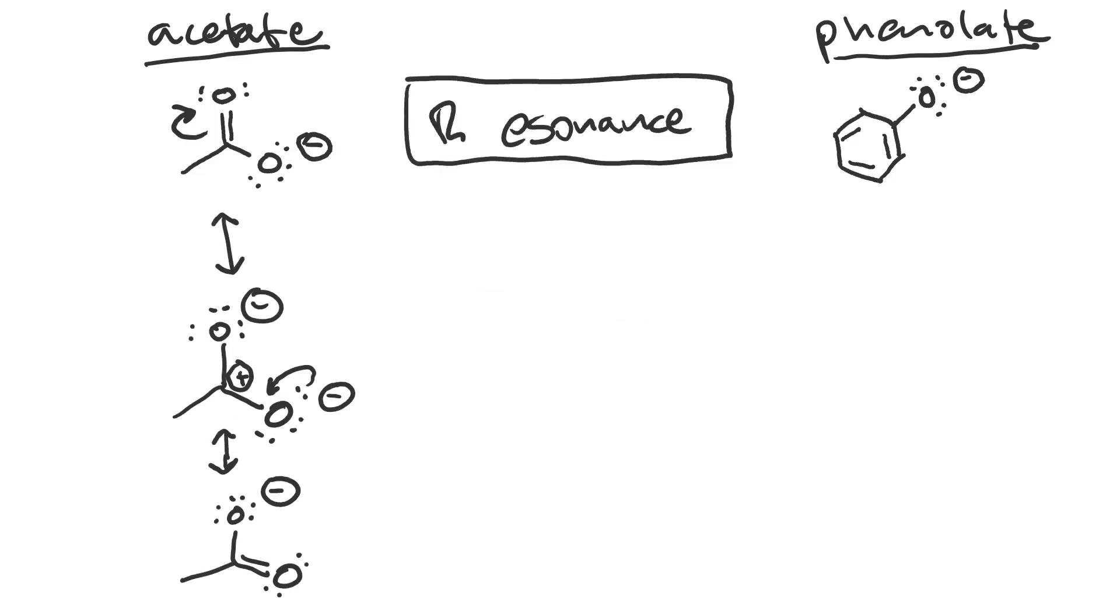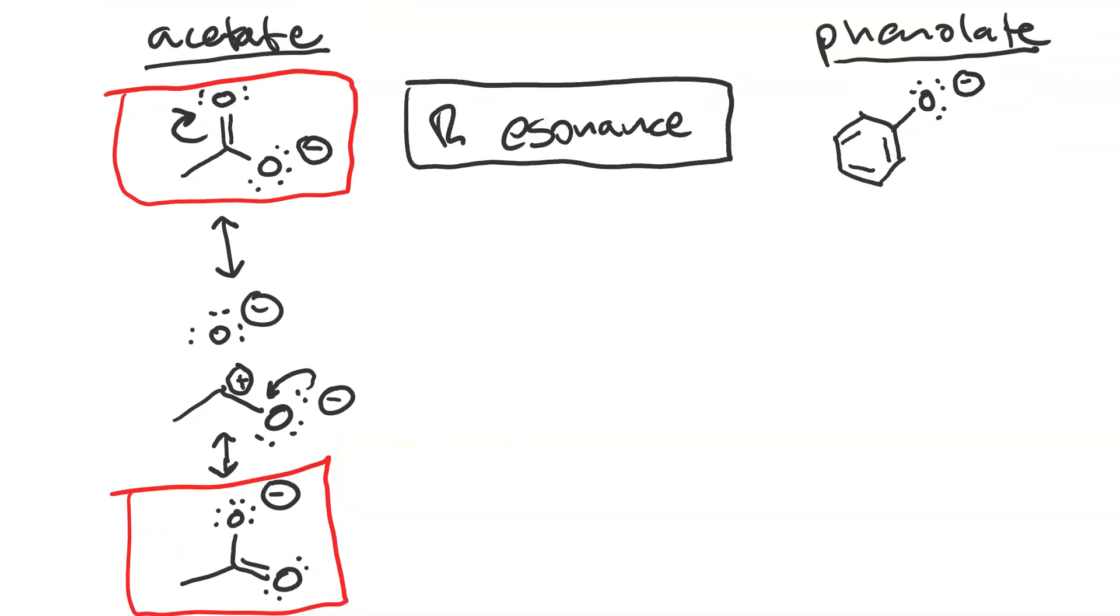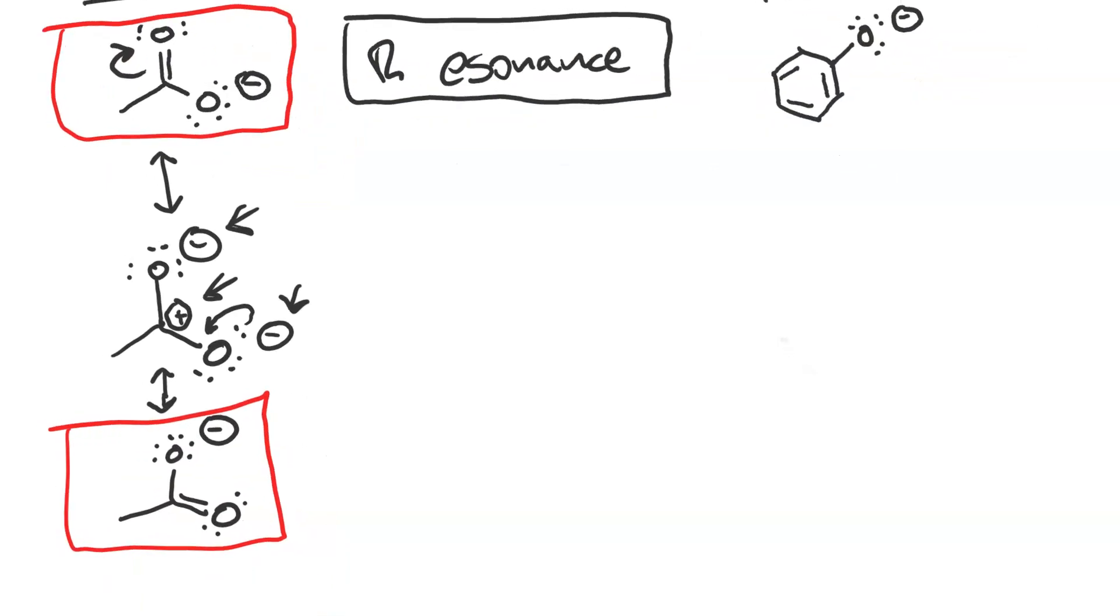Acetate has three resonance structures. The two important ones are the initial structure and the final one. Both of those are better than the middle resonance structure, which is a minor contributor for two reasons. One, the carbocation has a sub-octet. And two, you have three atoms with a non-zero formal charge, as opposed to just one.